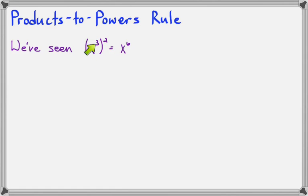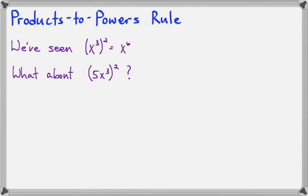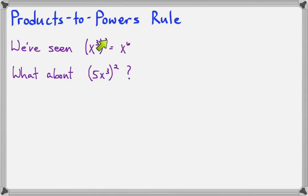But what if there's more than one factor inside the parentheses, something like 5x to the third all squared? The products to powers rule applies to a product like this — a multiplication — that is being raised to a power.